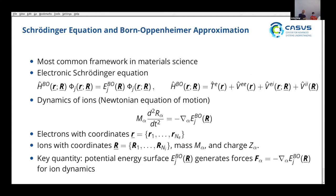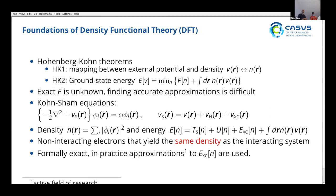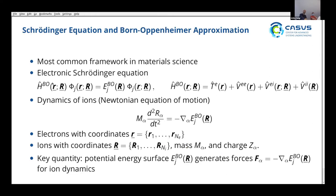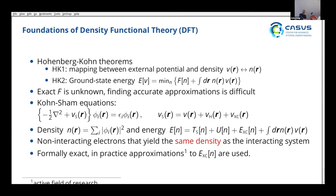Solving the Schrödinger equation as written is not possible numerically for large systems because the computational cost scales exponentially with the number of atoms. Quantum Monte Carlo can solve it but is very costly. For larger systems we need a different approach, and that is density functional theory, DFT.